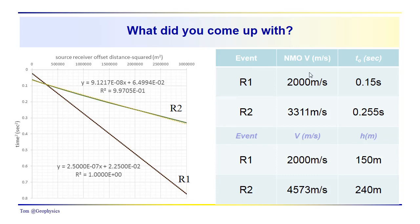So the NMO velocities that we get from taking the square root of the reciprocal of the slope for R1, we get 2,000 meters per second. For R2, we get 3311. Our T0s, again, the square root of the intercepts, 0.255 for R2, 0.15 for R1.